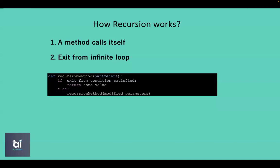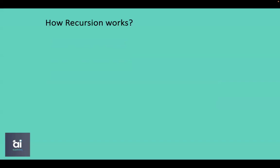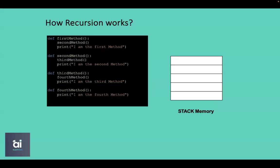Before explaining how recursion works internally, let's look at how a normal method works internally. Imagine we have four different functions where each calls the next. The first method calls the second, which then calls the third, and the third calls the fourth. The fourth method simply prints 'I am the fourth method' without calling any other method.